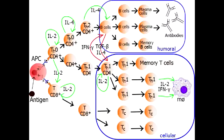T-Helper 2 cells recruit eosinophils for parasite defense, and they also help B cells by promoting immunoglobulin E production. T-Helper 2 cells are inhibited by the interferon gamma secreted by T-Helper 1 cells, illustrating the mutual inhibition between both T-Helper cell types.